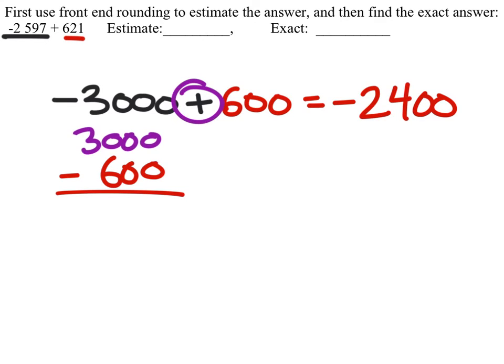Let's go ahead and find the exact answer. So I have negative 2,597 plus 621. I'm going to relate this to money once again. If you owed $2,597 and then paid off, which is what that 621 is, if you paid off $621 of that debt,